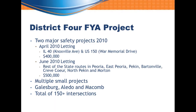After approval, I initially thought I'd have to change out all controllers and cabinets, so I put in $900,000 just to do Illinois 40 and US 150 in Peoria. But after meeting with manufacturers we found we could modify existing equipment, saving significant money. That allowed me to add all state routes in the Tri-County area — Peoria, East Peoria, through to Morton. We've since done multiple smaller projects and now have over 150 intersections with flashing yellow arrows covering our entire district.